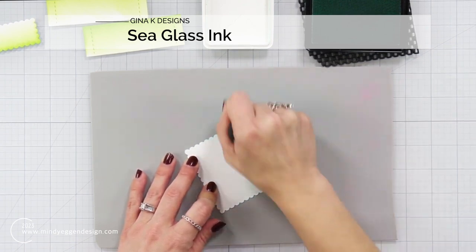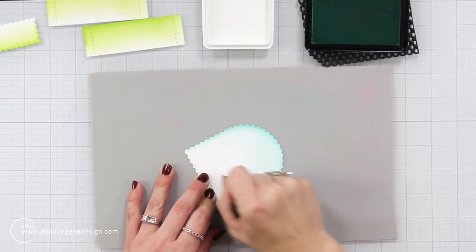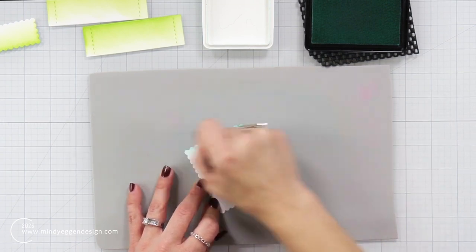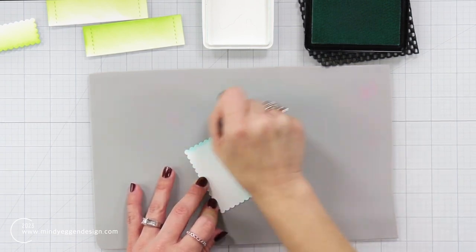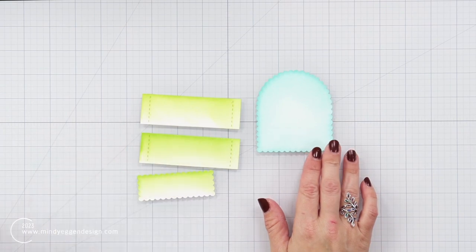Now for the scalloped piece, this is going to be my sky and I'm ink blending on a light blue. So this is sea glass ink from Gina K Designs, just kind of quickly going over that.